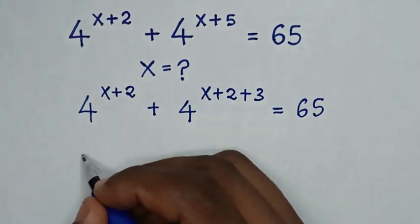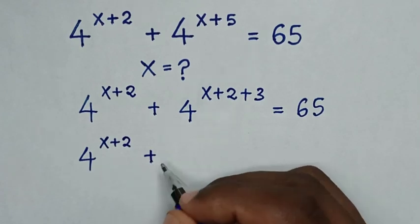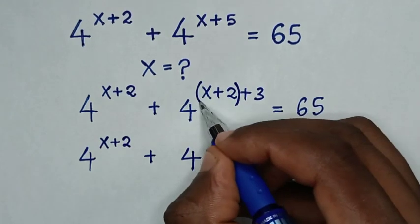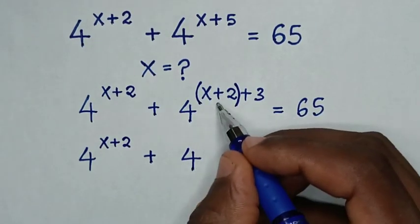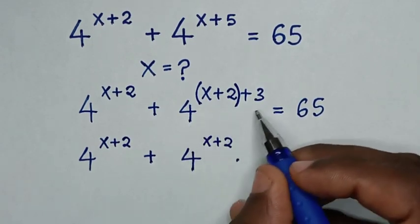Then our equation will be 4 power of x plus 2 plus 4. In here we can place bracket x plus 2, so it will be 4 power of x plus 2, then times 4 power of 3.